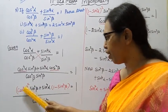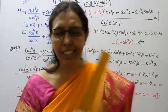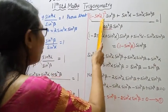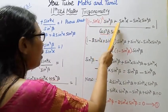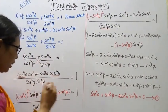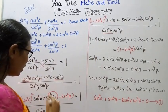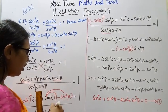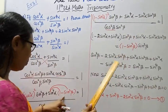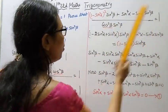Now, cos square alpha the whole square, that is 1 minus sin square alpha, the whole square, into sin square beta. Then sin power 4 alpha into 1, that is sin power 4 alpha into sin square beta, divided by cos square beta into sin square beta equal to 1.